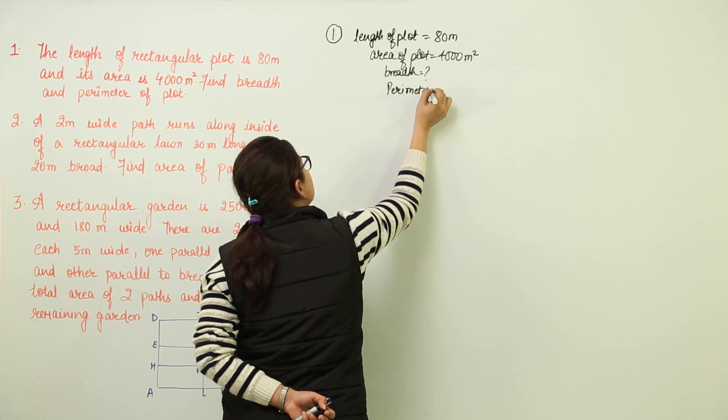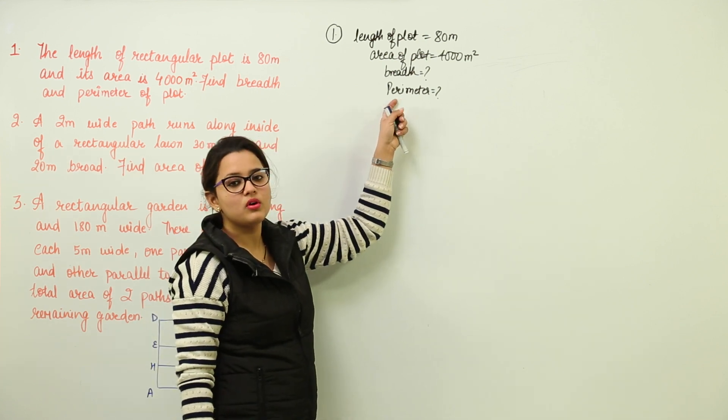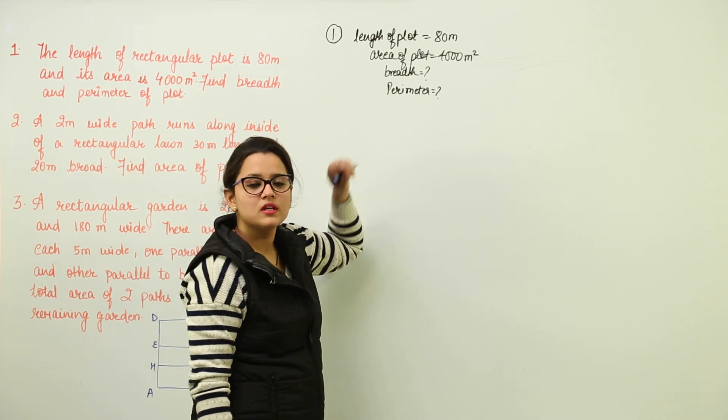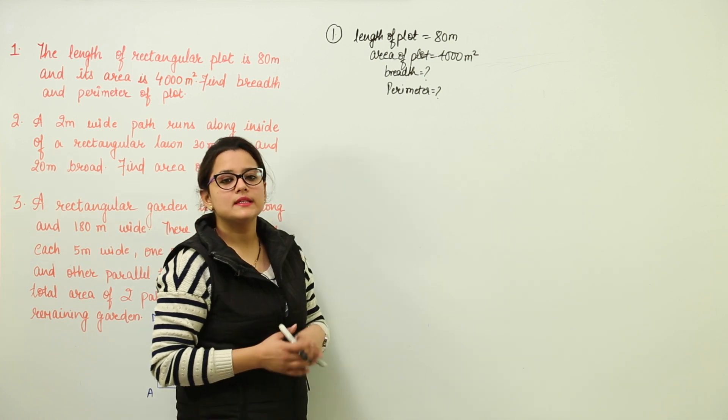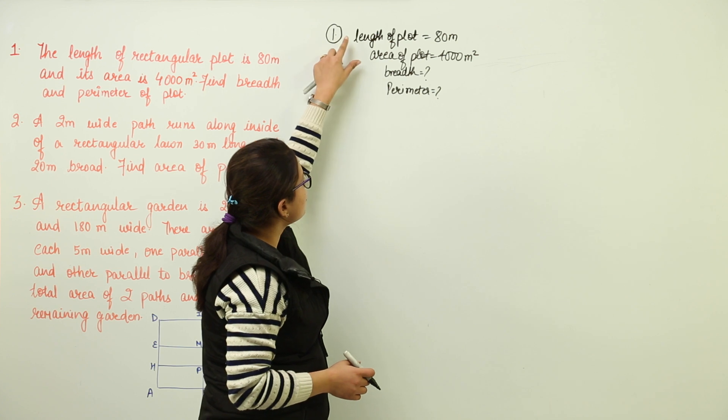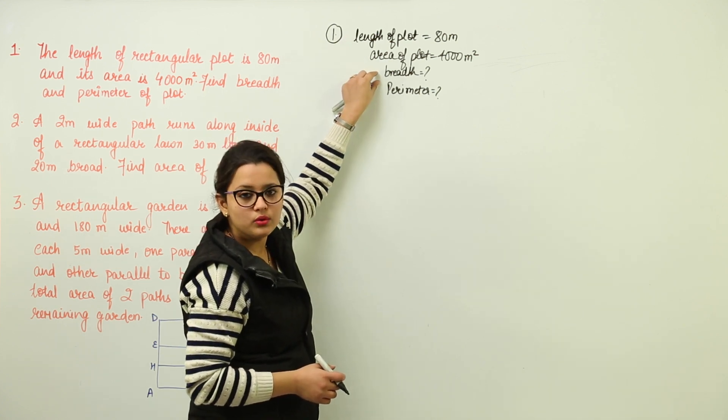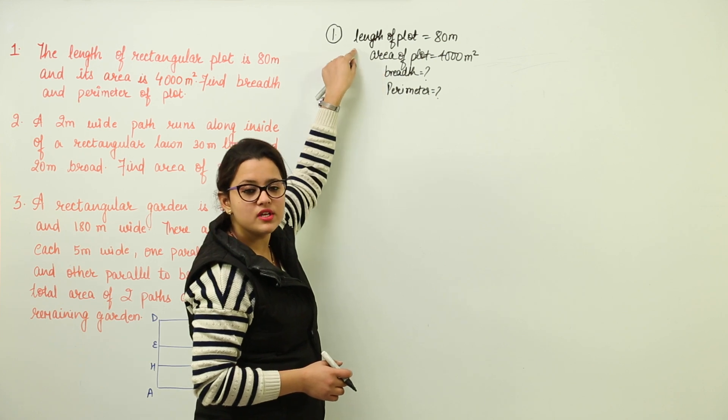So do we have any formula known for both the unknown quantities? We know the formula for perimeter but we are not aware of any formula for breadth. Then what should we do? Nothing but you can just compare that all these three quantities, all the given data can be used to find out the unknown quantity. Do we have any relation between them?